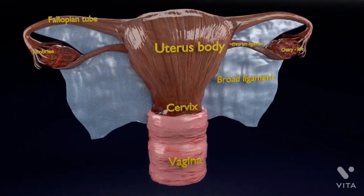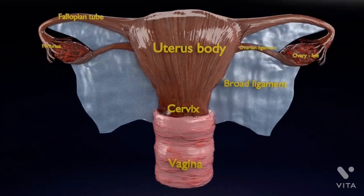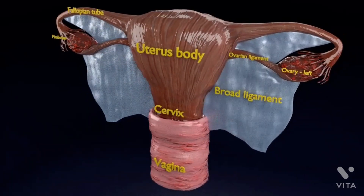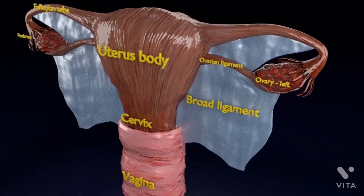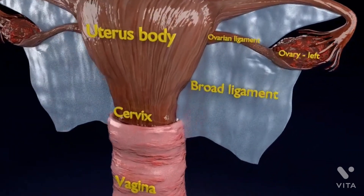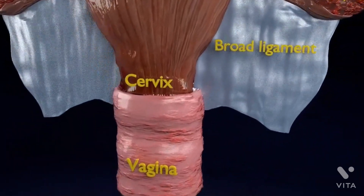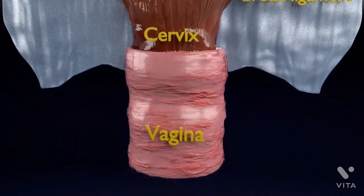This is part 2 of the uterus anatomy video. Now starting with the regions of the uterus. The fundus is the uppermost rounded portion of the uterus.